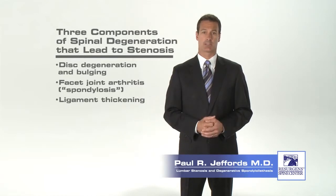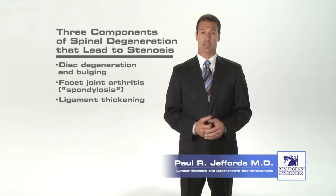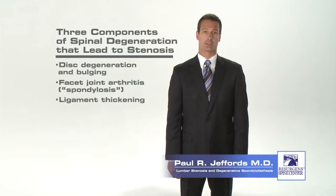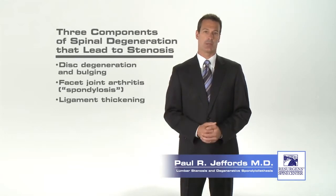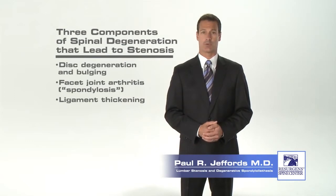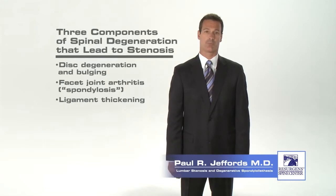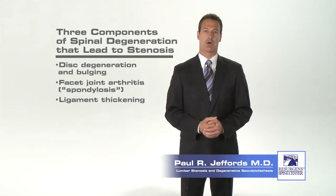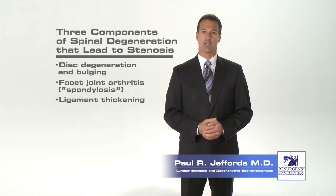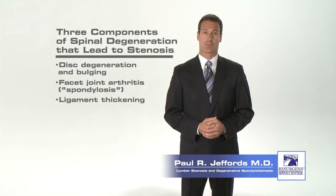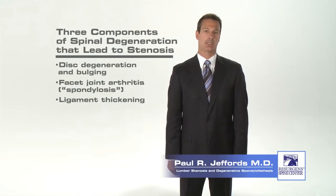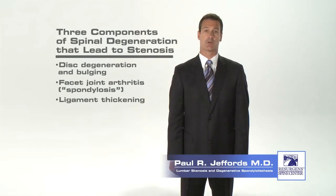As the disc provides less and less shock absorption, the facet joints start to see more and more stress. As a result, the facet joints may begin to develop arthritis, a condition also known as spondylosis. With facet joint arthritis, the joints get larger and also form bone spurs, which can contribute to spinal canal narrowing. Lastly, there is a ligament that runs along the inside of the spinal canal, just underneath the lamina, called the ligamentum flavum. Spinal degeneration can lead to thickening of this ligament, which also leads to stenosis.